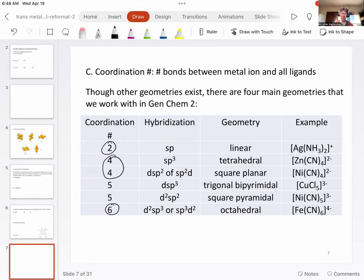Similar to Gen Chem 1, when there were two electron groups, the hybridization was sp and the shape was linear. That's the same. For four electron groups, the hybridization was sp3, and the geometry, the electron geometry was tetrahedral.